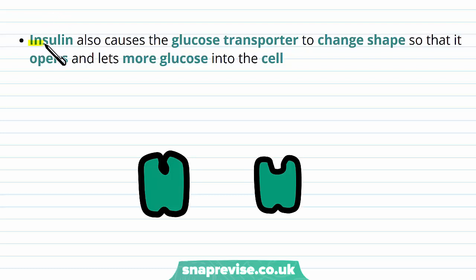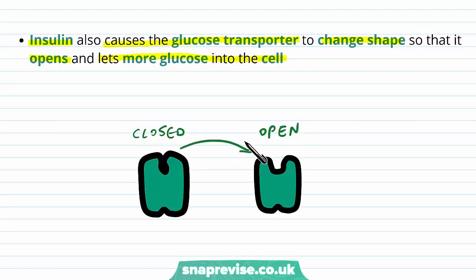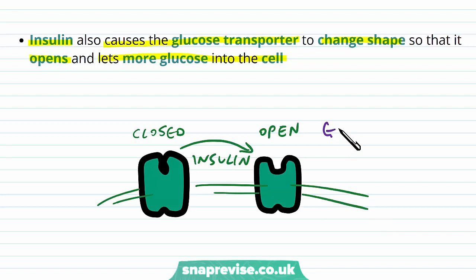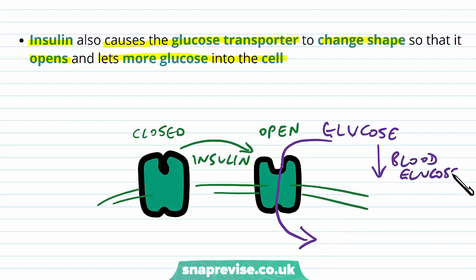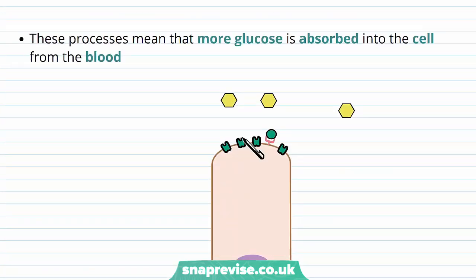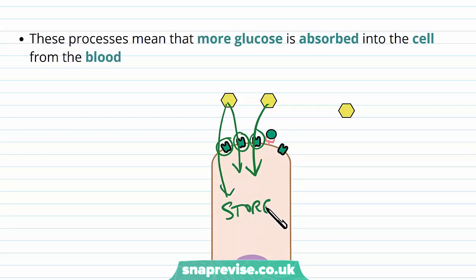As well as helping place the transporters into the membrane, insulin also causes the glucose transporter to change its shape slightly so that it opens up and allows more glucose to move through it into the cell. At a resting state it would be closed, but insulin allows it to open. Once it's sitting in the membrane of the cell, glucose in the blood passes from the blood through the channel and into the cell, therefore bringing blood glucose down. As more of these transporters are put into the membrane, glucose passes through into the cell to be stored or used, and the blood glucose concentration starts going back down.